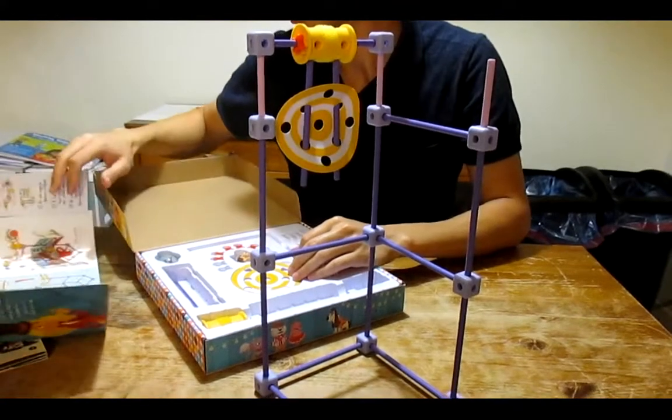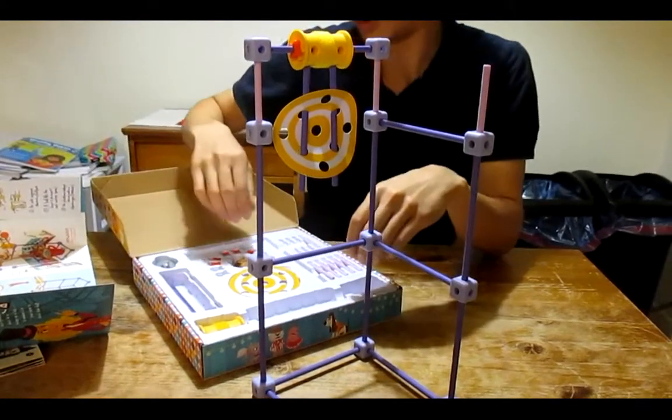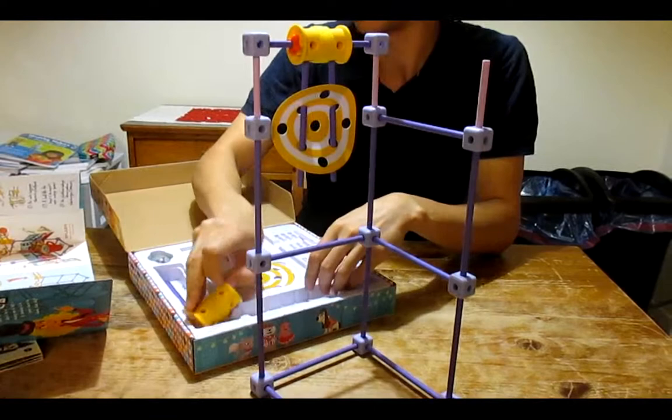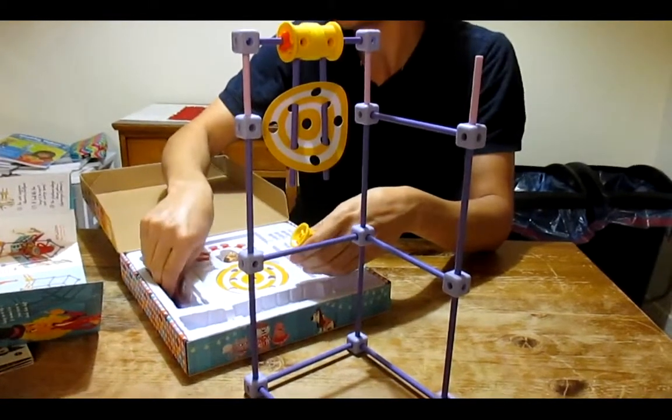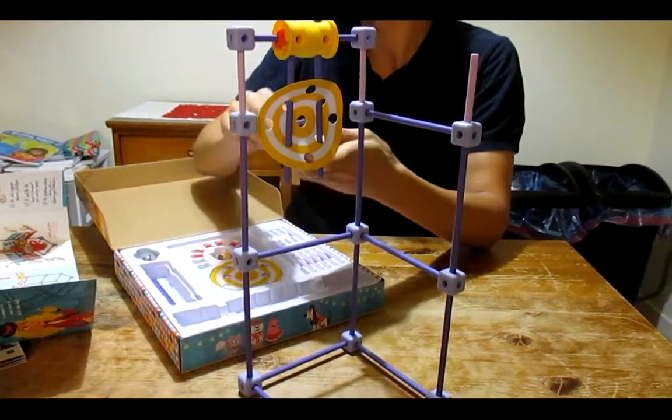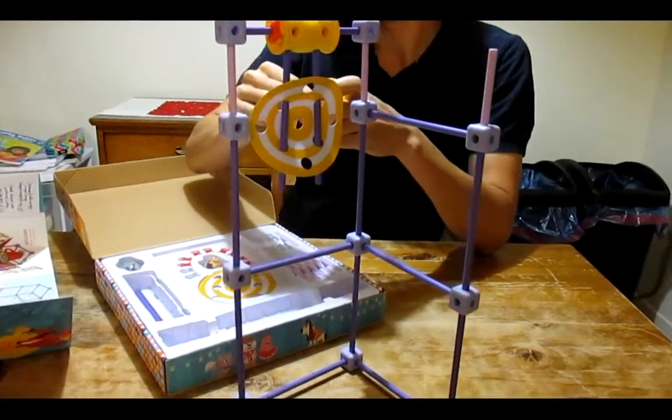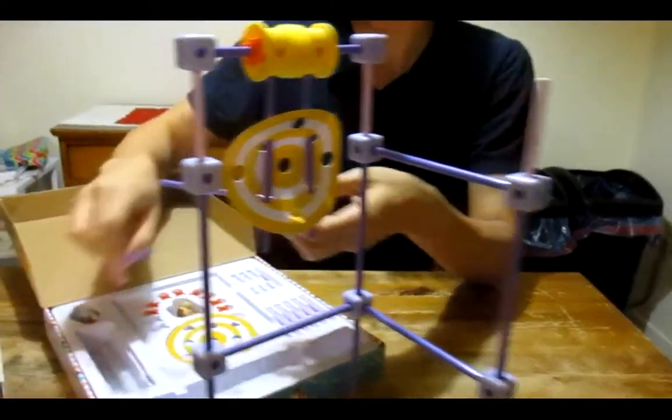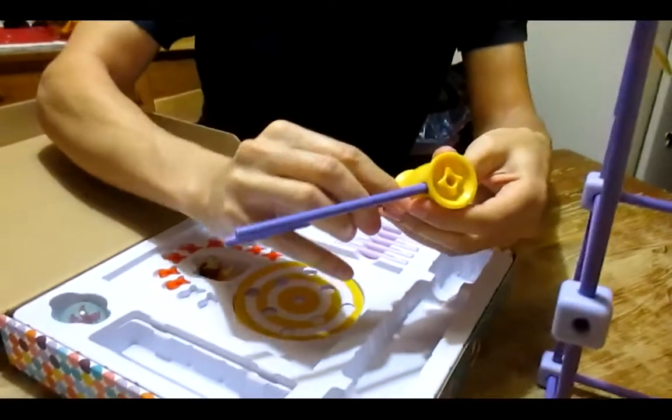Cool. And step six, we have to make the other one of these moving parts. Now this one's a little bit different. You need two of these bars on one end and we're going to get two of the pink ones in the other end.